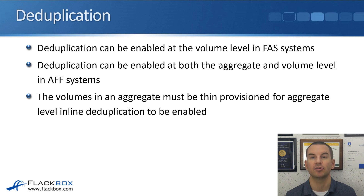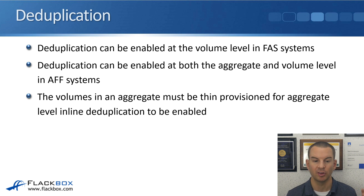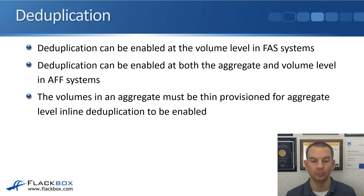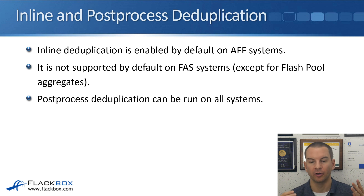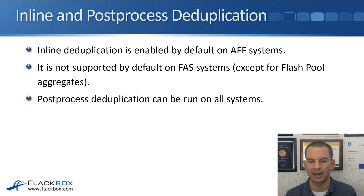Looking at deduplication, compression, and compaction in more detail — starting with deduplication. Deduplication can be enabled at the volume level on FAS systems. On AFF systems, it can be enabled at the volume level and also at the aggregate level. The volumes in an aggregate must all be thin provisioned for aggregate-level inline deduplication to be enabled on AFF systems. Inline deduplication is enabled by default on AFF systems. It's not supported by default on FAS systems except for flash pool aggregates — you can turn it on on FAS systems, but you need to do that at the command line.